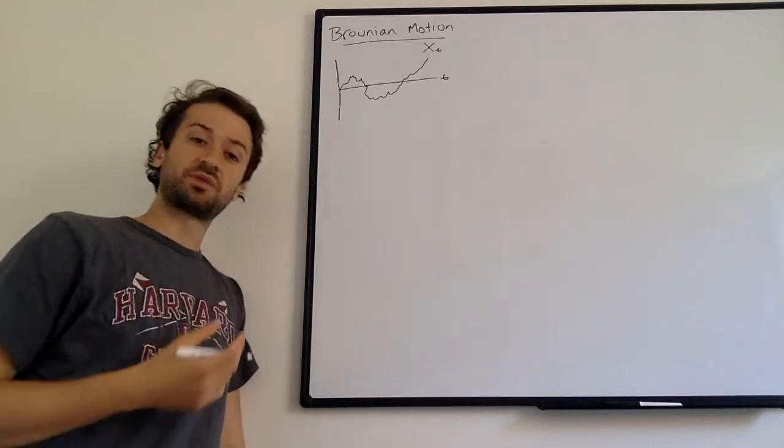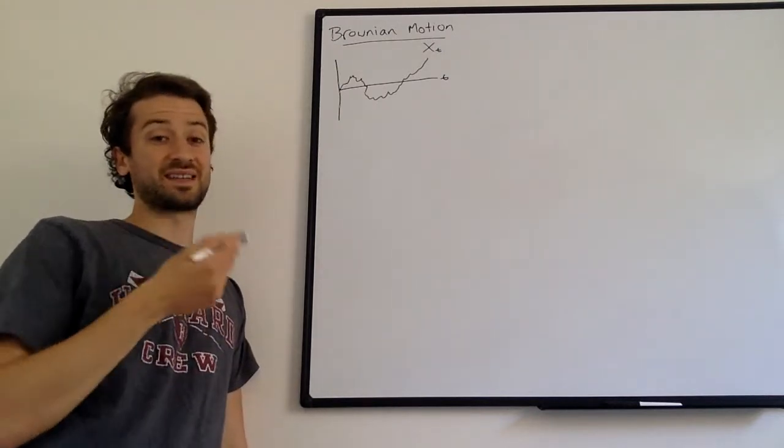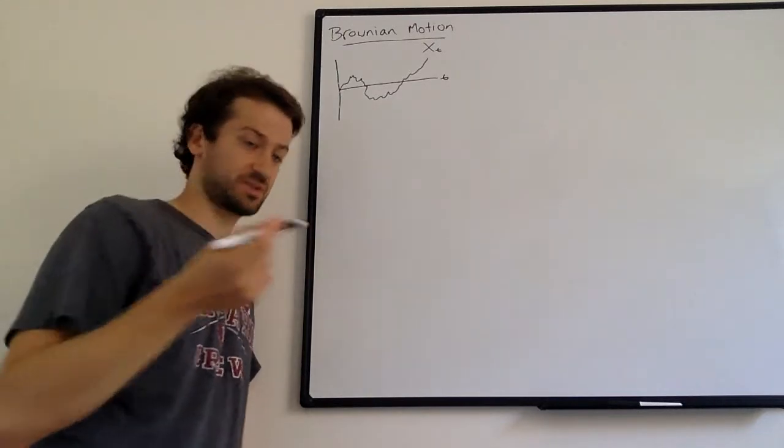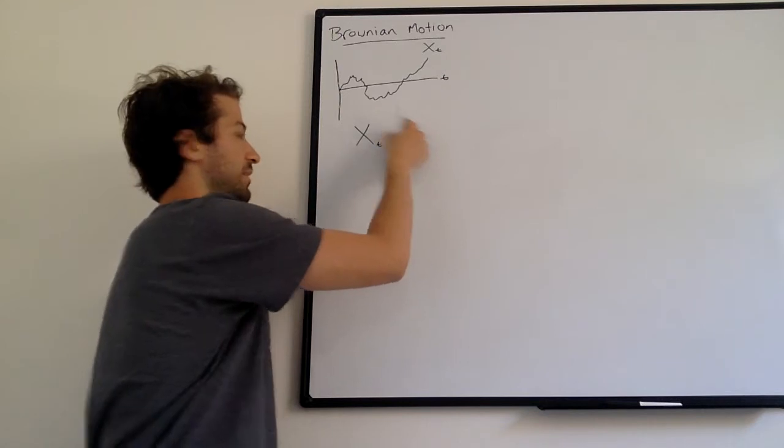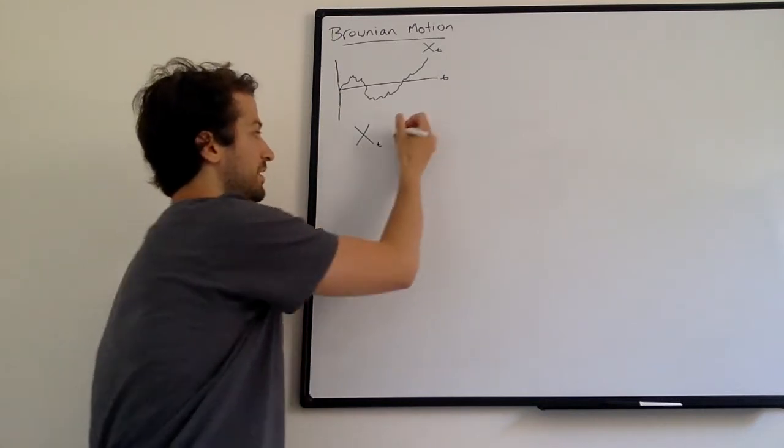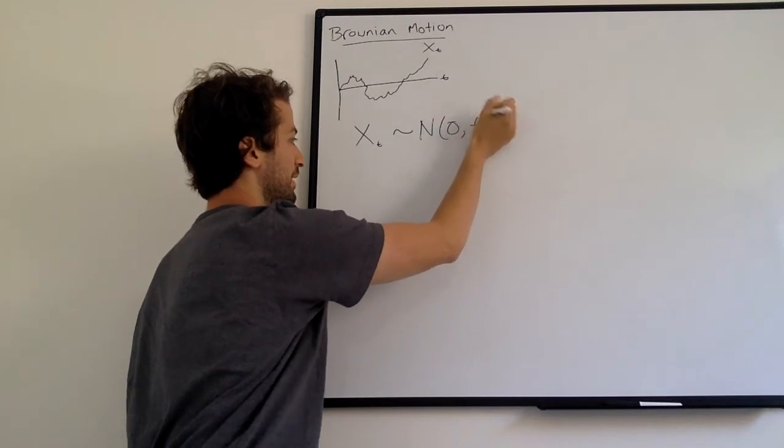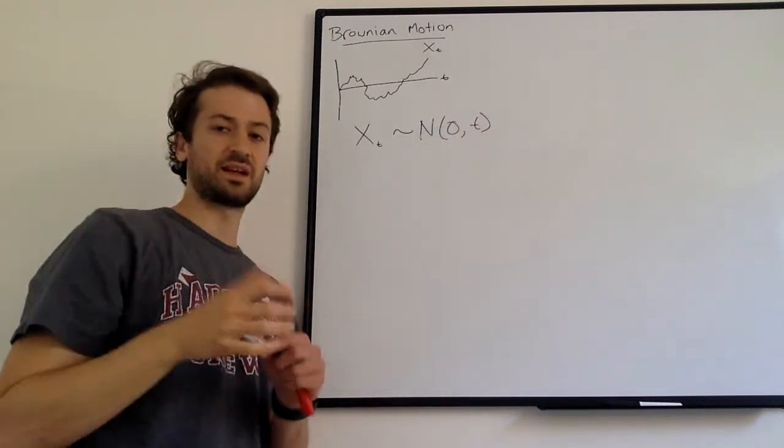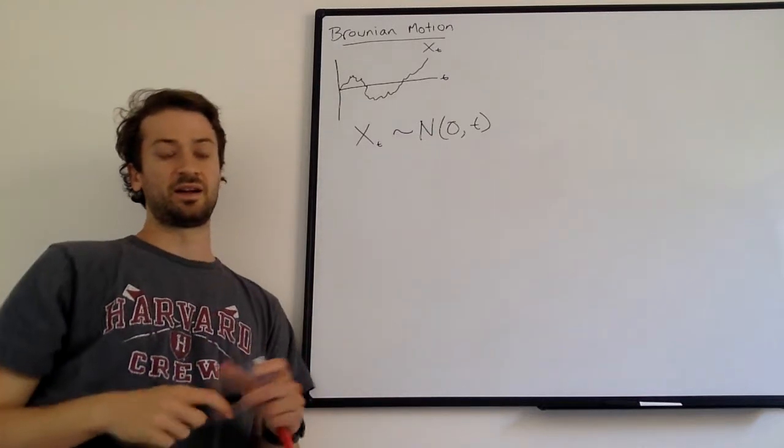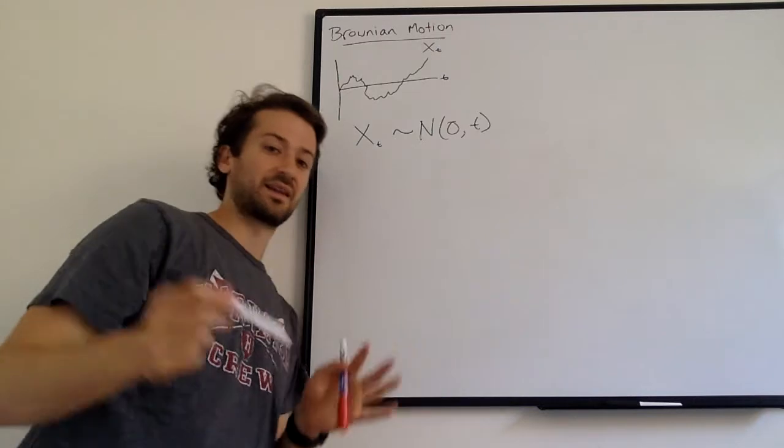And it's actually really cool that we have the tools of probability and statistics to really succinctly define a Brownian Motion. We can just define a Brownian Motion as x sub t, so the random variable at time t has a normal distribution, mean zero, variance t. And that's it. Very, it's going to get a little bit more complex, but you can see how nice and succinct this definition is.